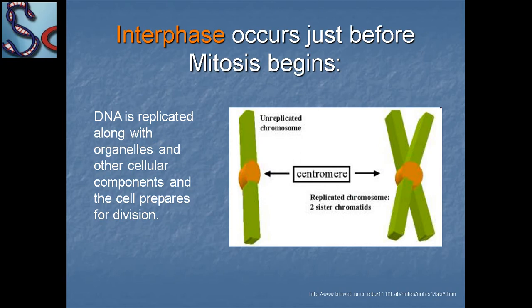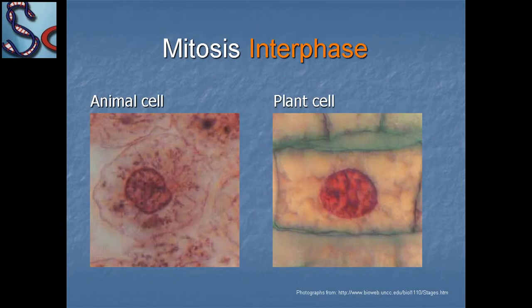Interphase occurs just before mitosis begins. DNA is replicated along with the organelles and other cellular components, and the cell prepares for division. Here is an example of animal cell and plant cell interphase of mitosis.